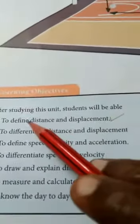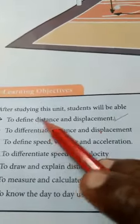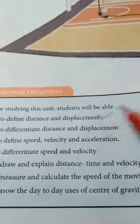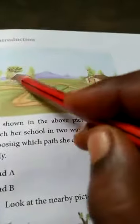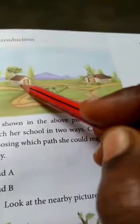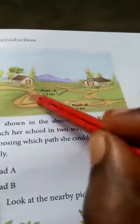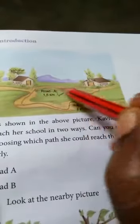First, we will define distance and displacement. Introduction — see the picture now. Here is a home and this is our school. There are two paths to reach the school.